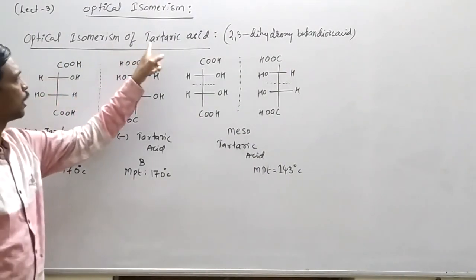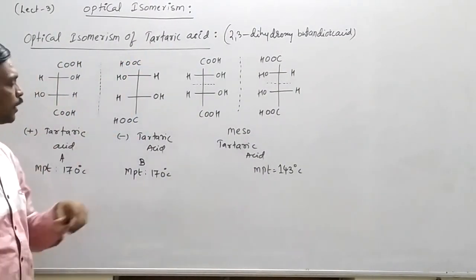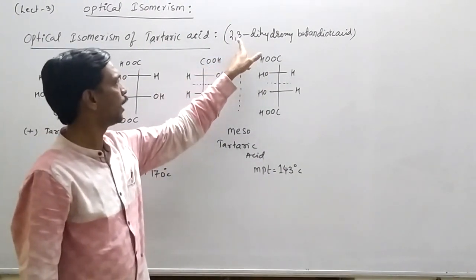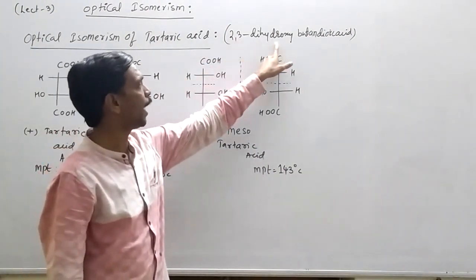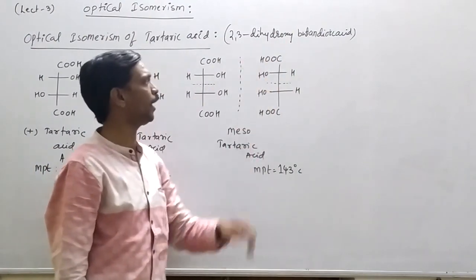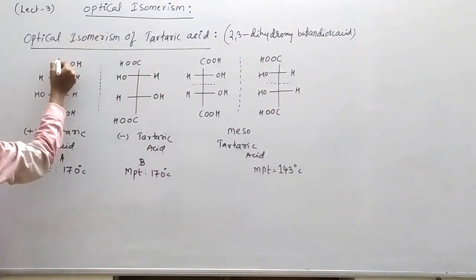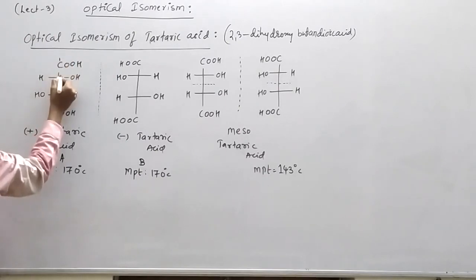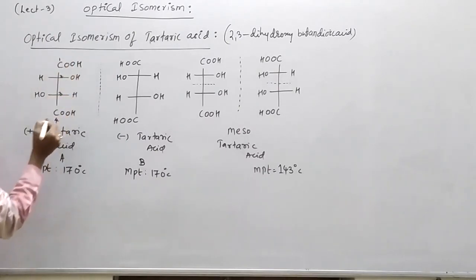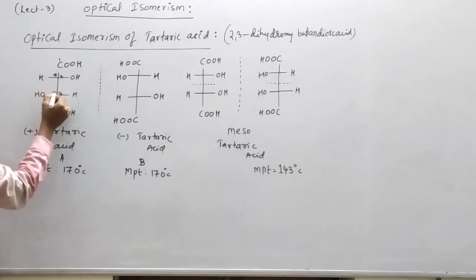Optical isomerism of tartaric acid. IUPAC name is 2,3-dihydroxybutanedioic acid. Tartaric acid has total number of carbon atoms: one, two, three, four. Second and third carbons are chiral carbons.